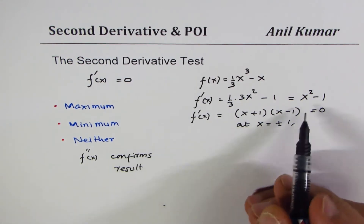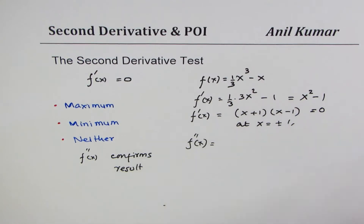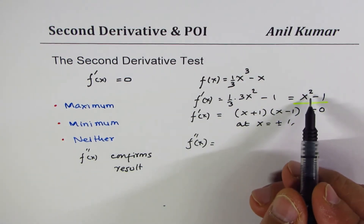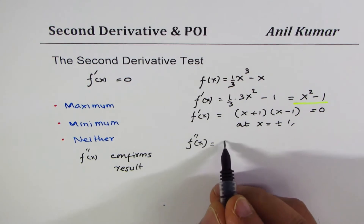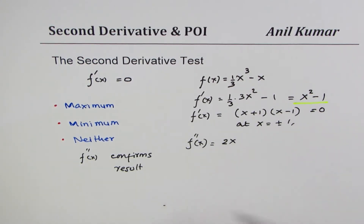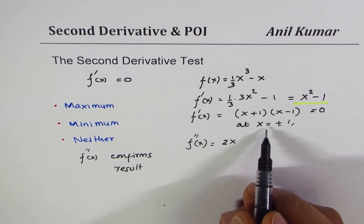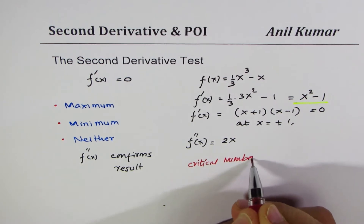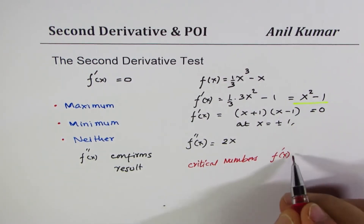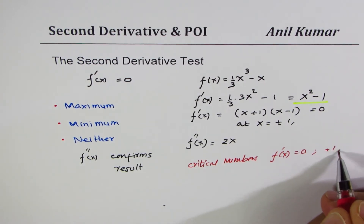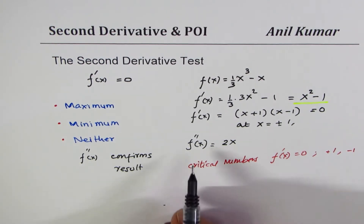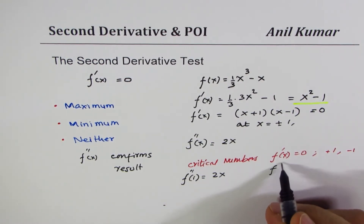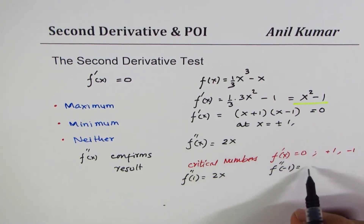To confirm, we find the second derivative. The first derivative is x² - 1, so the second derivative is 2x. We have two critical numbers: x = +1 and x = -1. Evaluating the second derivative: f''(1) = 2(1) = 2, and f''(-1) = 2(-1) = -2.